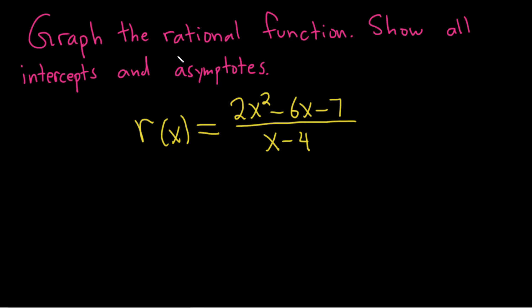Hello. In this problem, we're going to graph this rational function, and we're going to show all intercepts and asymptotes on the graph. So let's go ahead and do that. We'll start by finding all of the asymptotes and all of the intercepts.